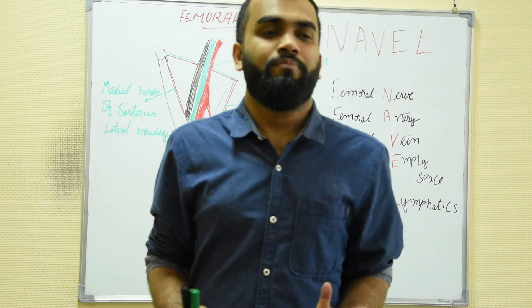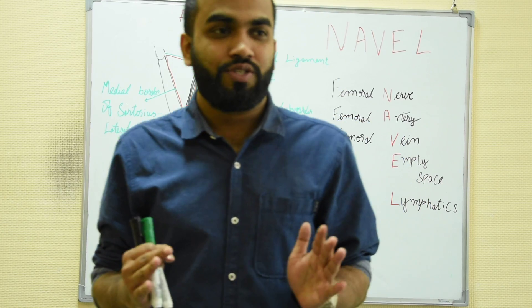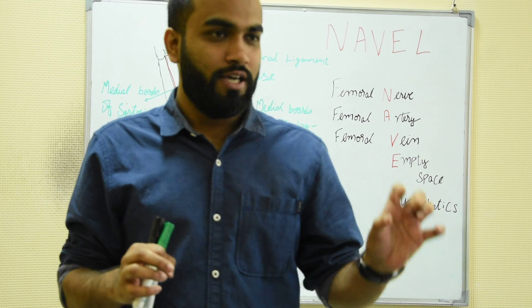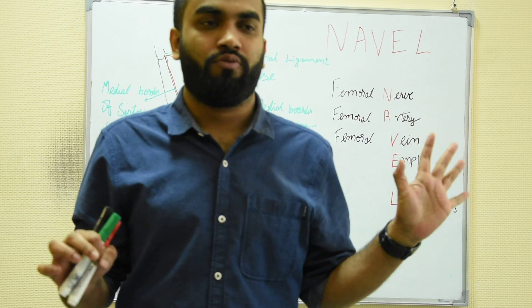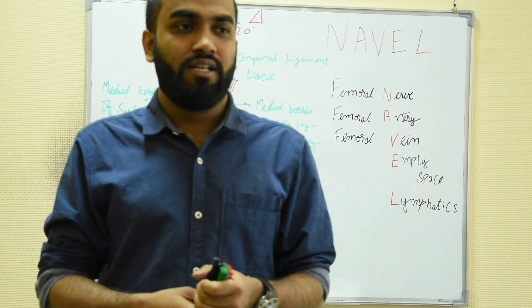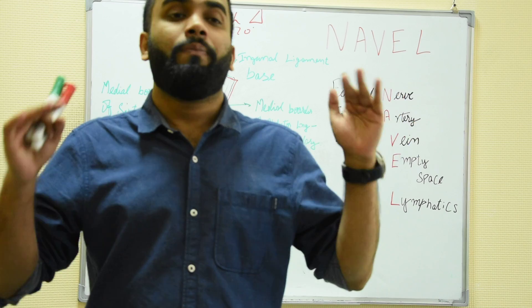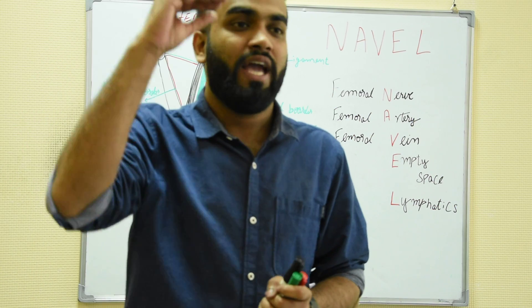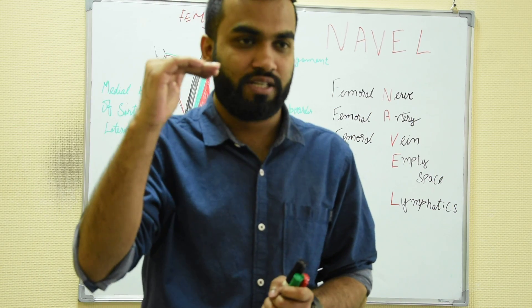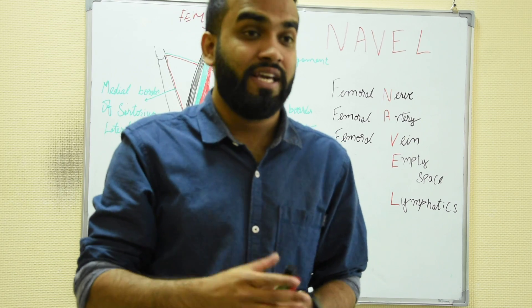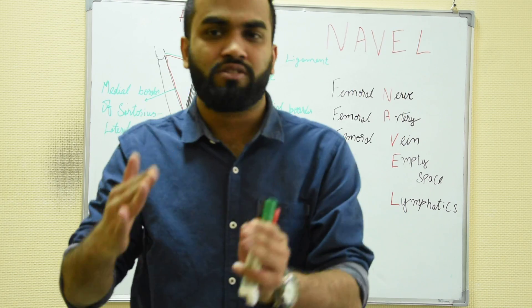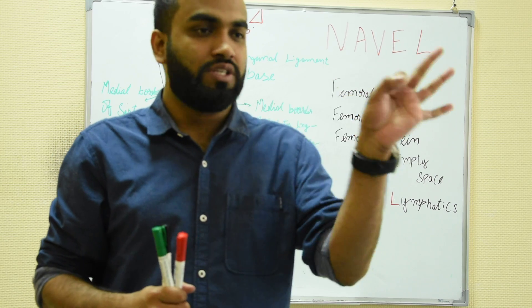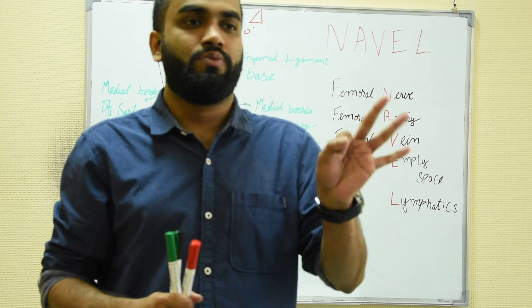Next is a very important topic called the femoral triangle — a lot of questions come from here. First, you have to know the boundaries. The base or superior part is formed by the inguinal ligament, the lateral boundary is by the sartorius muscle, and the medial boundary is by the adductor longus. These three things are very important.